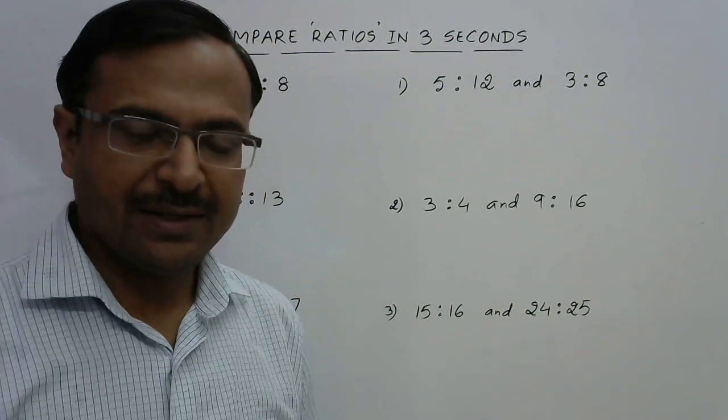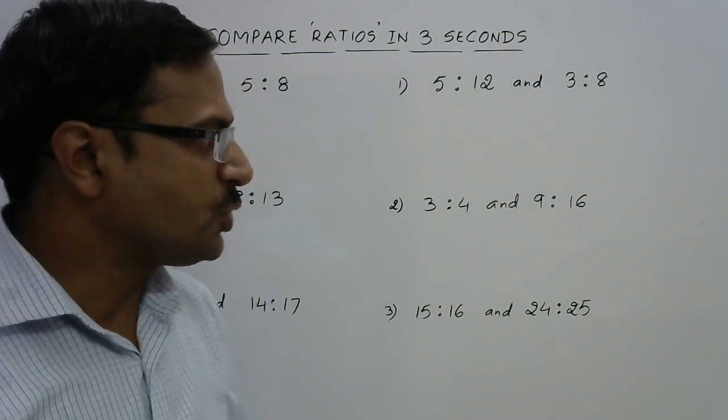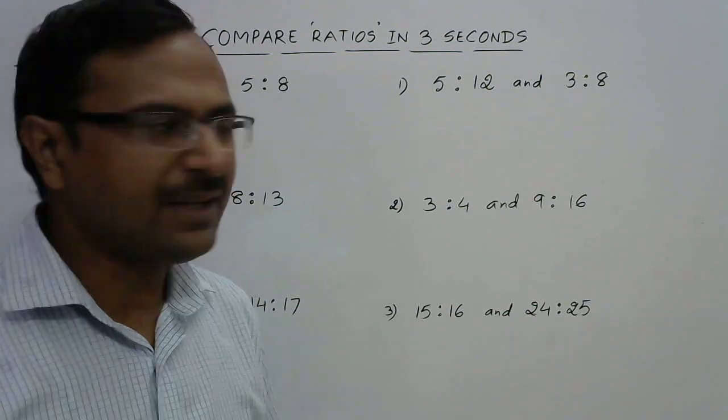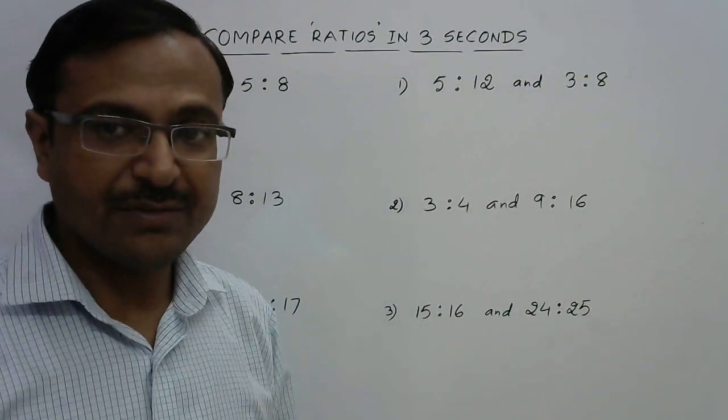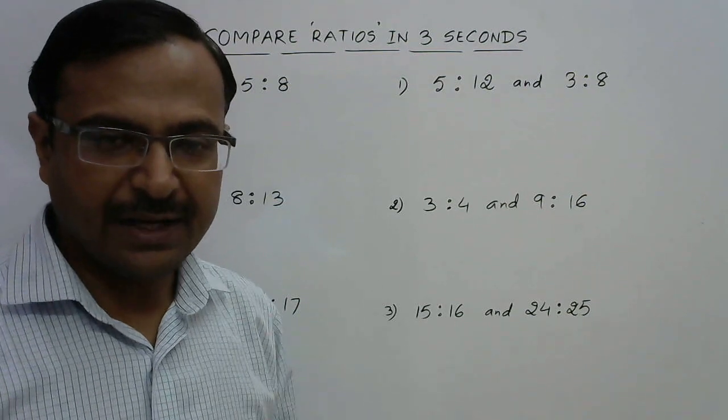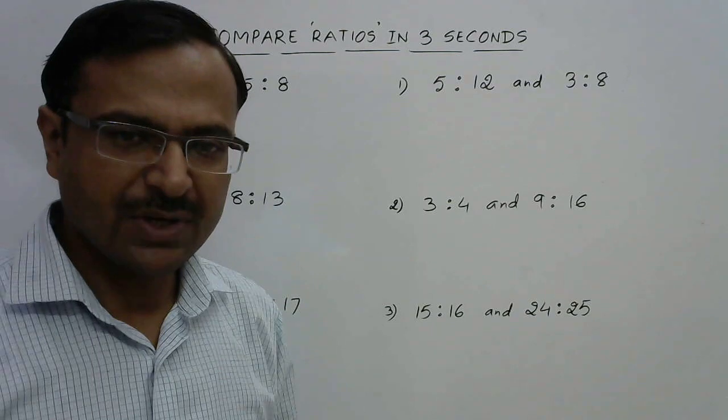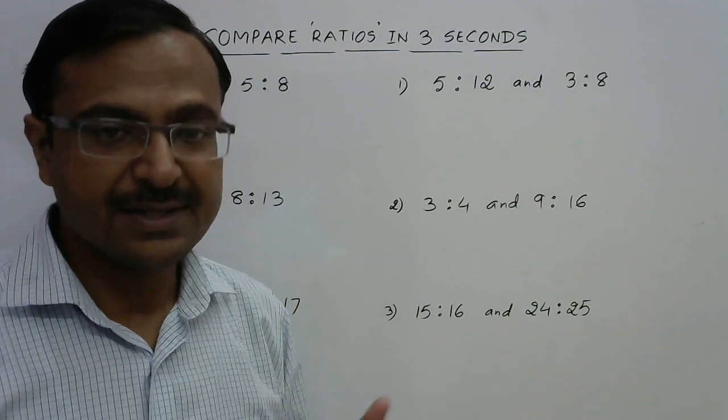Hello friends, in this video I shall tell you an amazing shortcut through which you can compare two given ratios. Here we have 5 ratio 12 and 3 ratio 8, so we need to tell which of the two is greater or whether they are equal. Comparison of ratios and comparison of rational numbers is nearly the same.